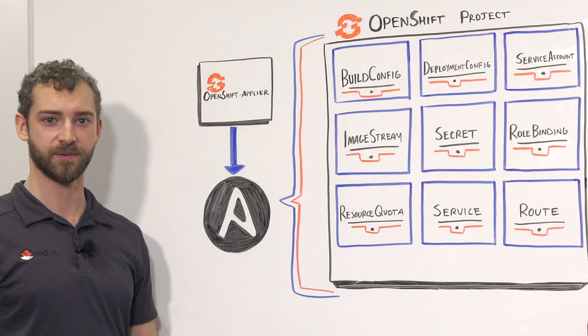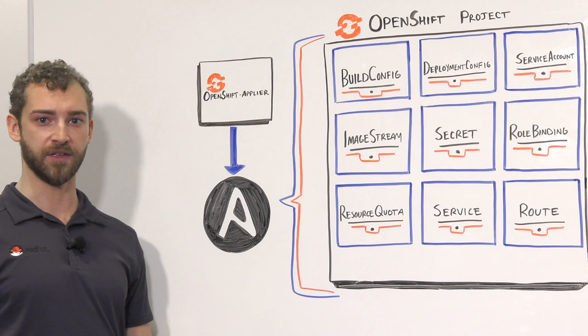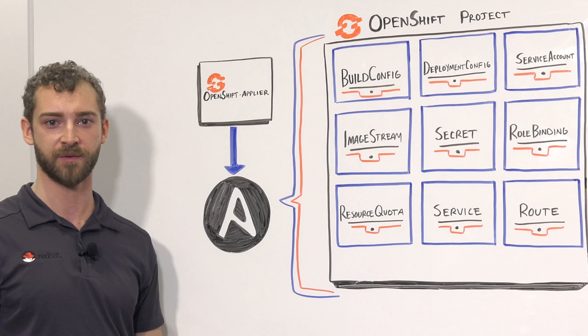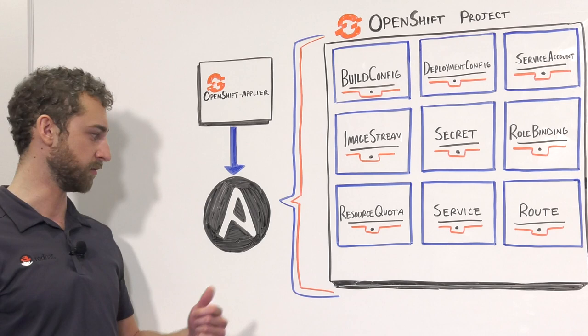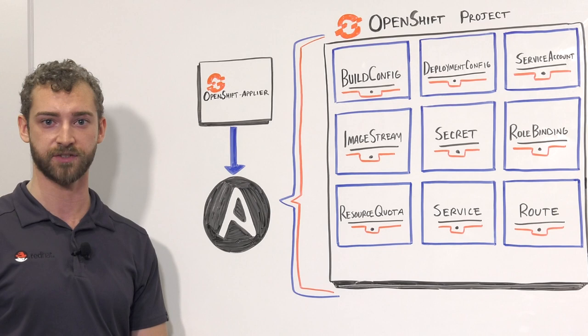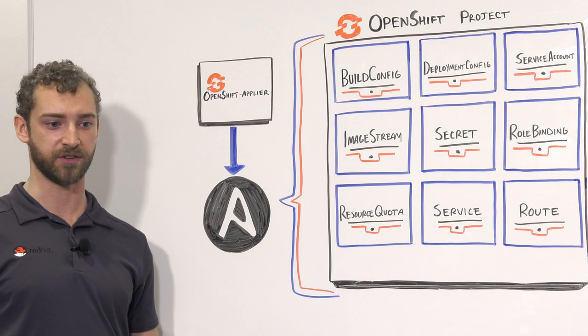Absolutely. It sounds like you need a little more flexibility than what an OpenShift template will allow. This is really where Ansible and the OpenShift Applier come in handy. The OpenShift Applier is an Ansible role created by the Red Hat COP. While it still applies OpenShift templates, the real flexibility comes in with Ansible. You can specify different group vars, and in those group vars you can say you want these different variables with particular values, whereas in your test cluster you want slightly different values for those variables.